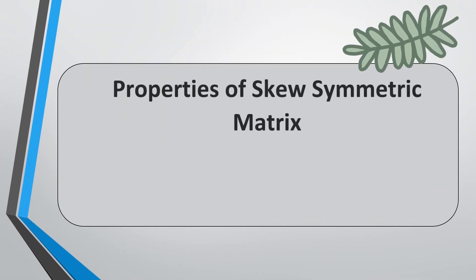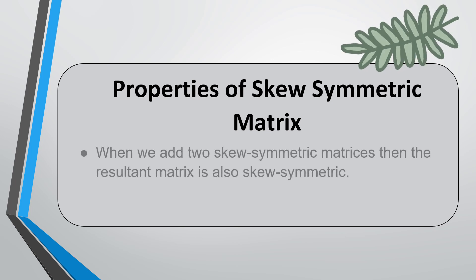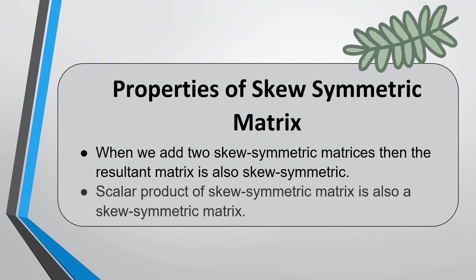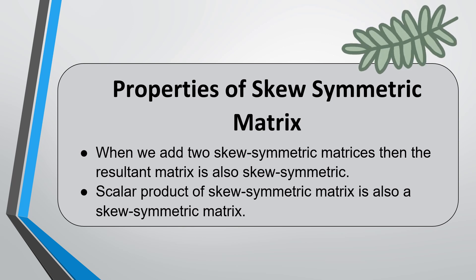Properties of skew symmetric matrix. First, when we add two skew symmetric matrices, the resultant matrix is also skew symmetric. Second, the scalar product of a skew symmetric matrix is also a skew symmetric matrix. Third, the diagonal of a skew symmetric matrix consists of zero elements, and therefore the sum of elements in the main diagonals is equal to zero.